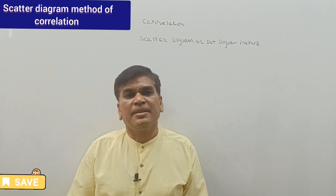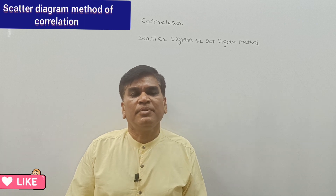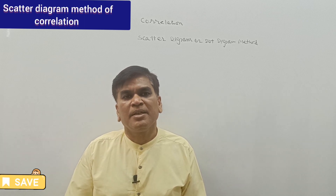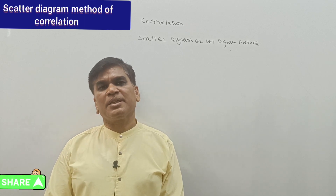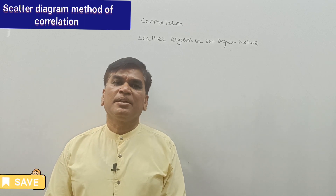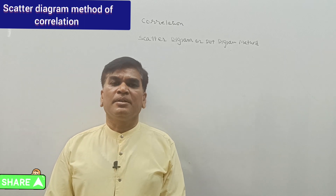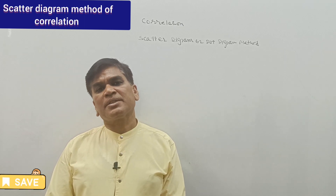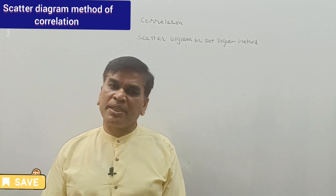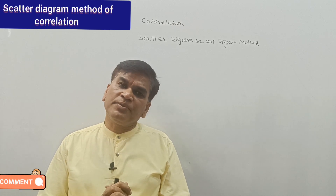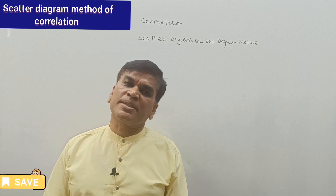Hello students, welcome once again. In the last video related to the chapter of correlation, we discussed what is correlation and how many types of correlation there are. We discussed positive correlation, negative correlation, linear or curvilinear correlation, and the degree of correlation — higher degree, moderate degree, lower degree — and also the methods for measuring correlation.